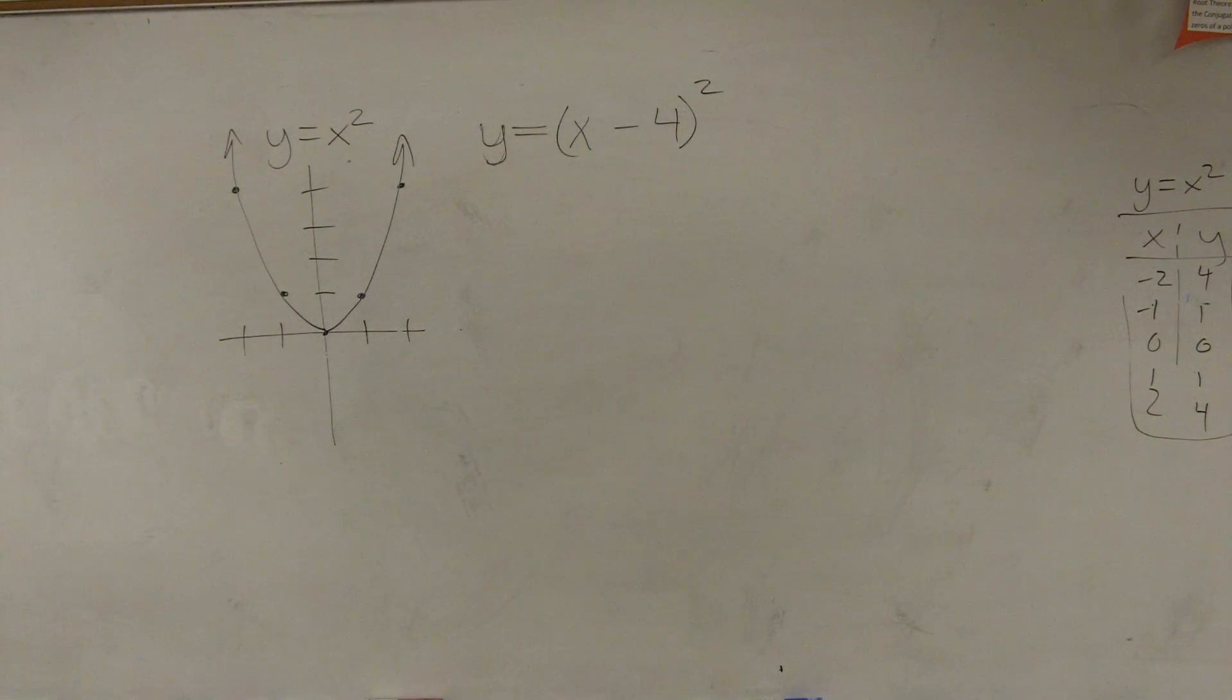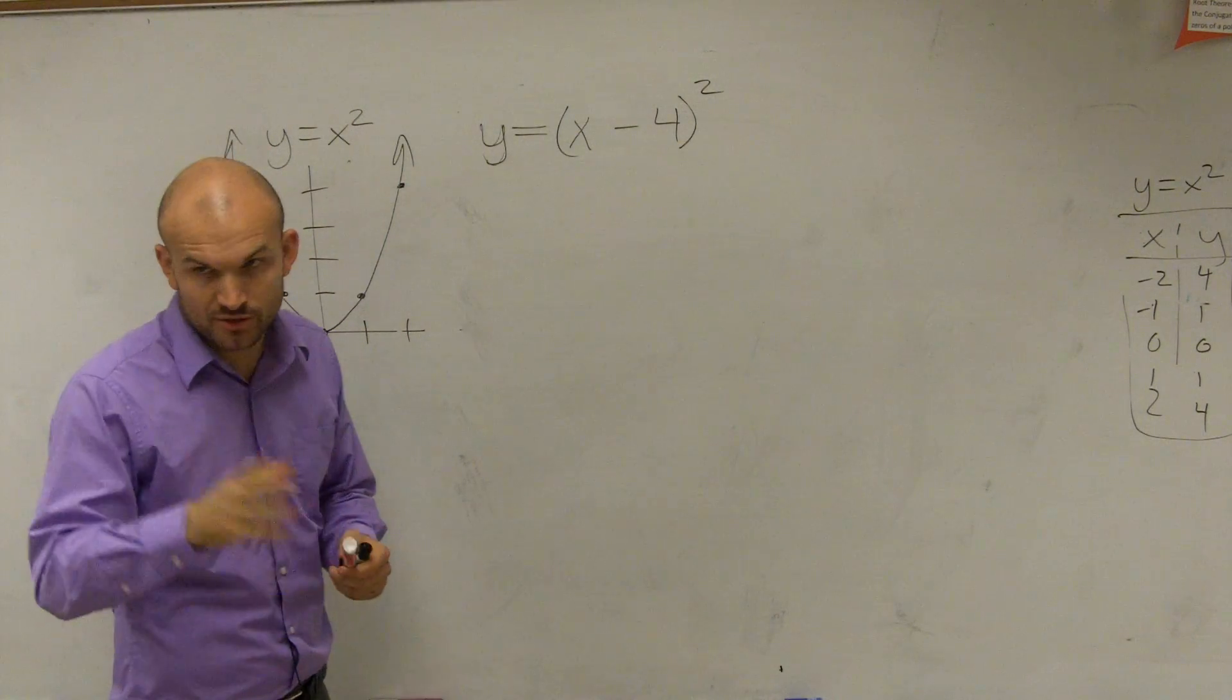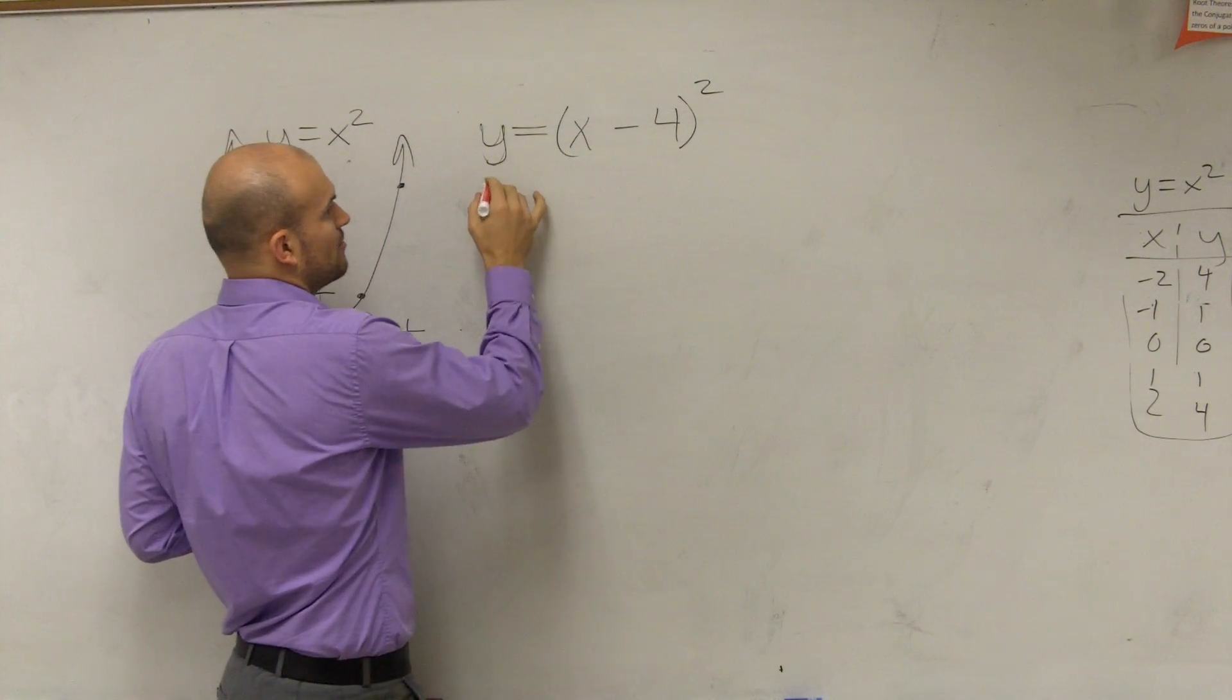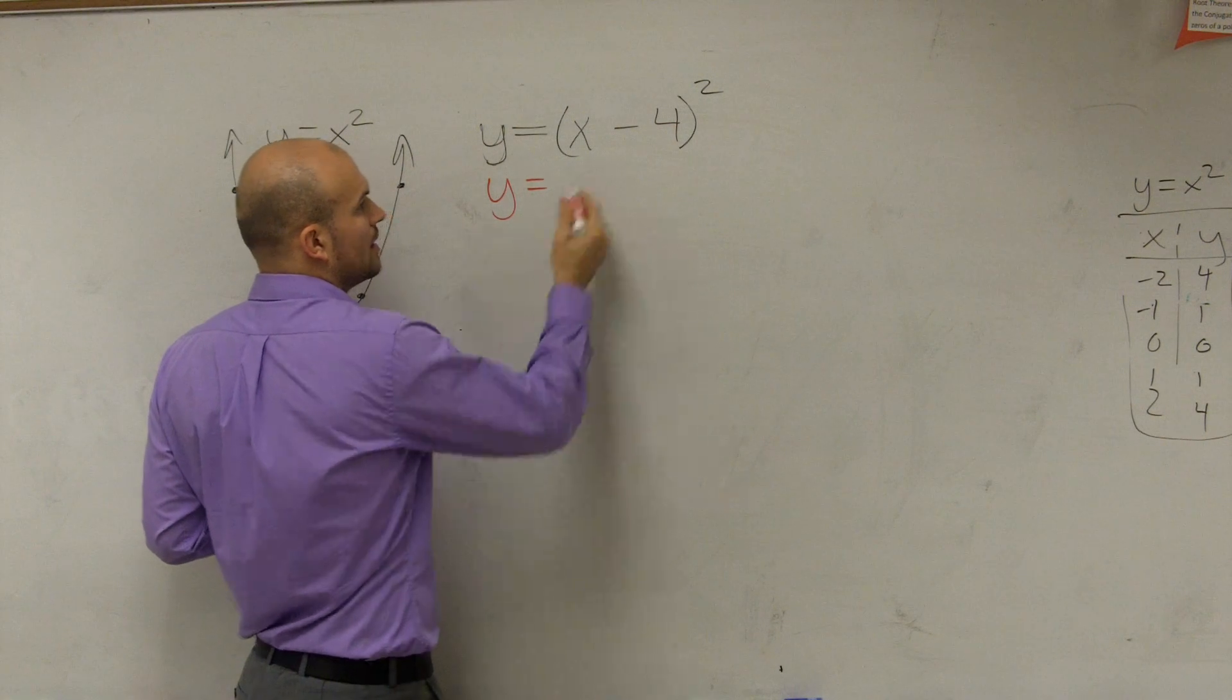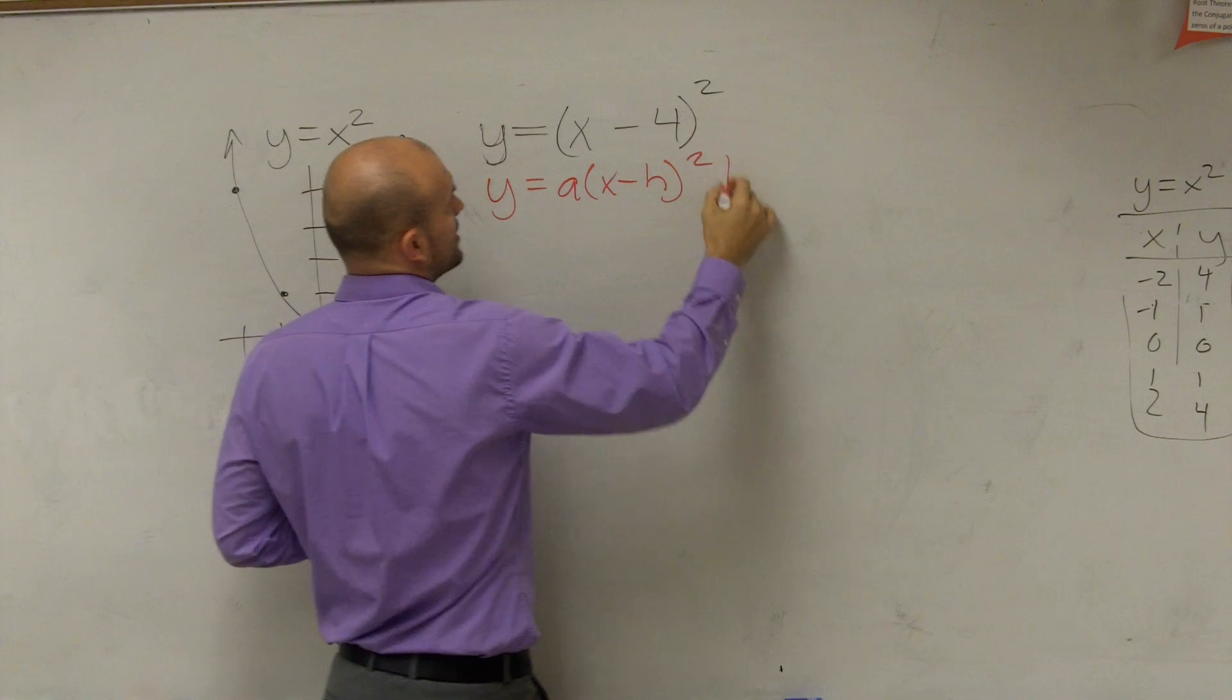I have the parent graph graphed, and what I'm going to do, if I want to graph this, the first thing that I'll probably do, which I didn't do last one, which will probably make a little more sense, is I'm going to write the equation in vertex form: a times x minus h squared plus k.